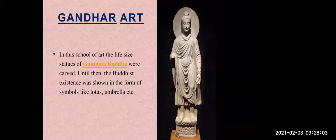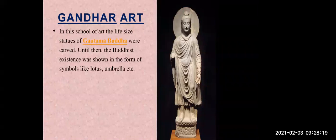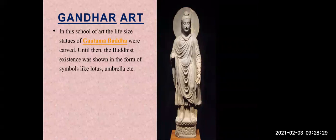Gandhara art was discovered during the Kushana Empire. In this school of art, life-size statues of Gautam Buddha were carved. Until then, the Buddha's existence was shown in the form of symbols like the lotus and umbrella. In this school, statues of Gautam Buddha were carved in different forms — for example, using symbols of the lotus and the umbrella.